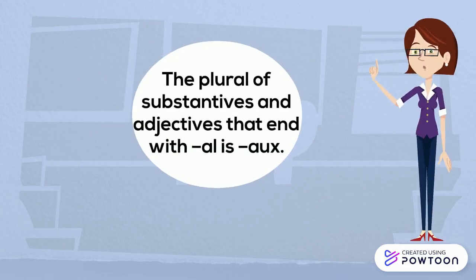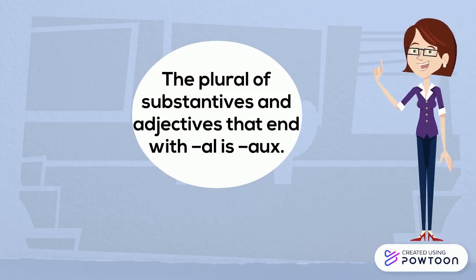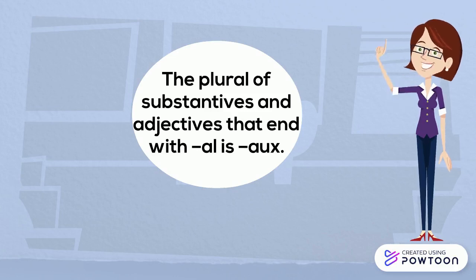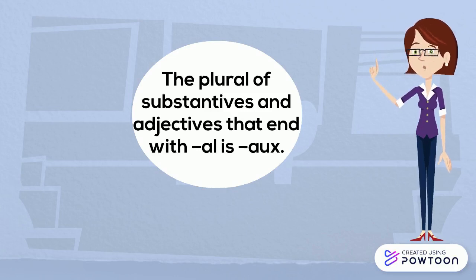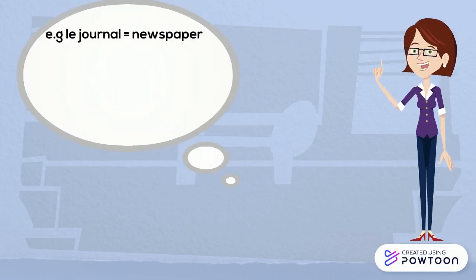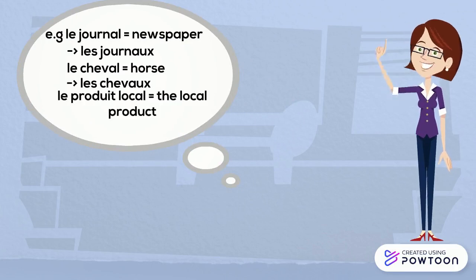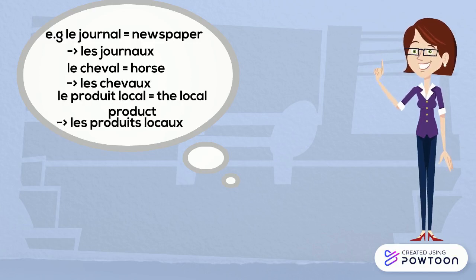The plural of substantives and adjectives that end with AL is AUX. Be careful with this one — students tend to forget about it throughout the year. For instance: 'le journal' (newspaper) → 'les journaux'; 'le cheval' (horse) → 'les chevaux'; 'le produit local' (the local product) → 'les produits locaux'.